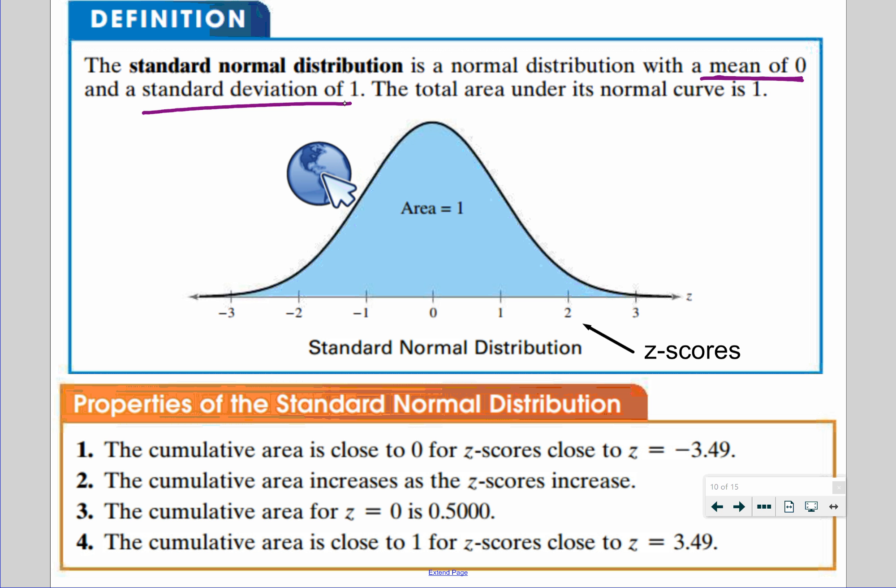Properties of this curve: first of all, our standard deviations become those z-scores. Remember, a z-score is how far you are from the mean by standard deviation. So if my z-score is two, that means I'm two standard deviations to the right of the mean. If my z-score is negative one, it means I'm one standard deviation to the left. The cumulative area, if your z-score is about negative 3.49, when we say cumulative area we mean area to the left, so up left to right to that z-score, is approximately zero.